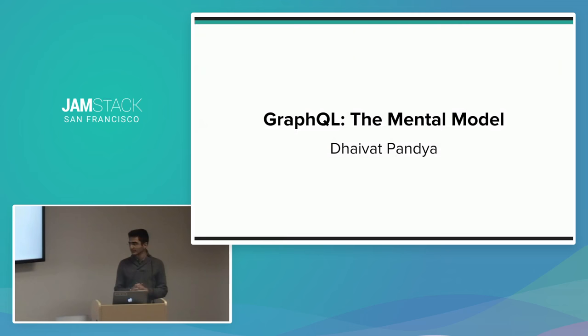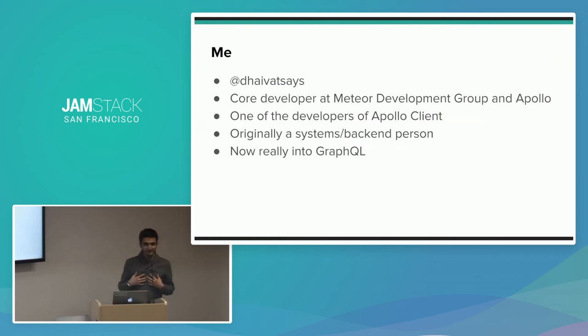Today I want to talk about the mental model behind GraphQL. Rather than spend time showing you how to build a GraphQL app, what I really want to cover is the motivation behind GraphQL, the kinds of improvements it offers, and also go into a bit of depth about how Apollo Client — one of the leading GraphQL client implementations — handles the caching of GraphQL results.